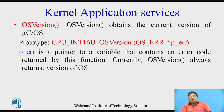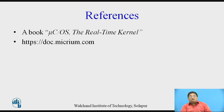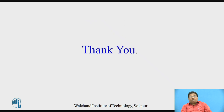OS_Version obtains the current version of MUCOS. Its prototype is: OS_VERSION OS_Version(OS_ERR *p_err), where p_err is a pointer to a variable containing an error code. OS_Version always returns the version of the operating system. References used are the book 'MUCOS: The Real-Time Kernel' and the site micrium.com. Thank you.